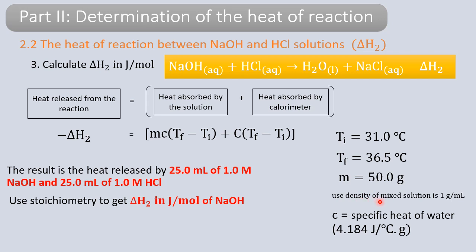Approximate the density of the mixed solution to be 1 gram per ml. Ti is 31 degrees Celsius and Tf is 36.5 degrees Celsius. Again, delta H2 calculated from this formula is for this amount of substance only, so you need to find delta H2 for 1 mole of sodium hydroxide.